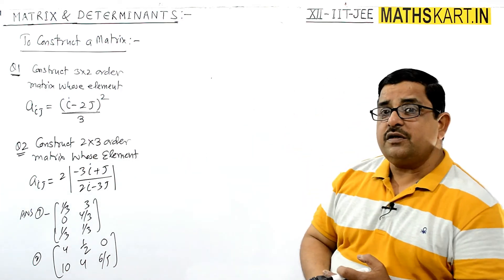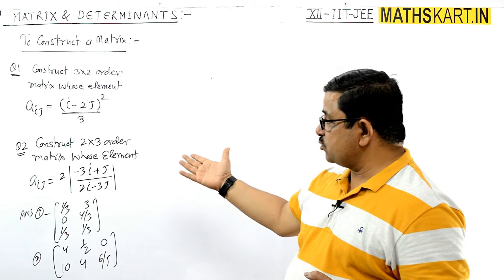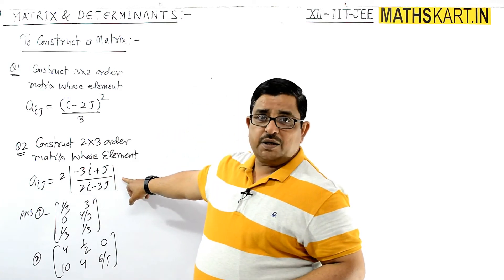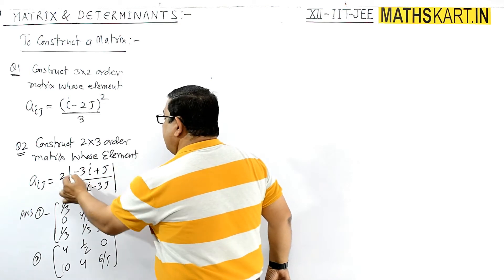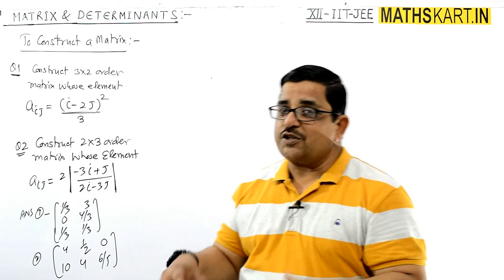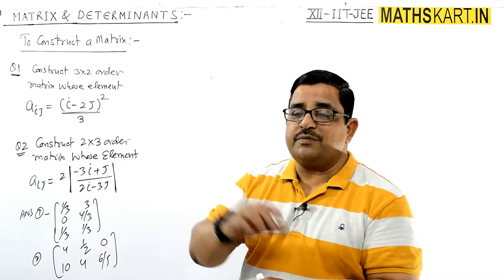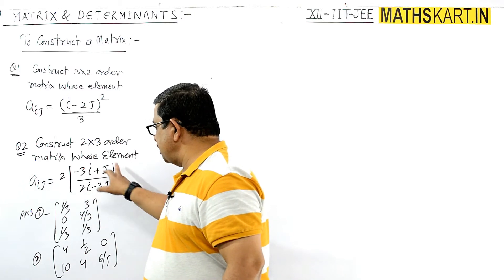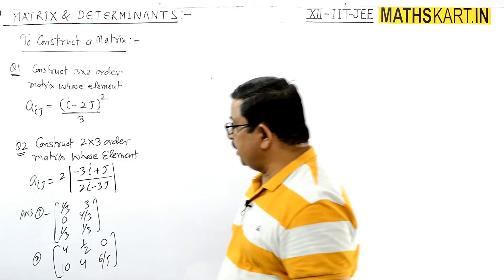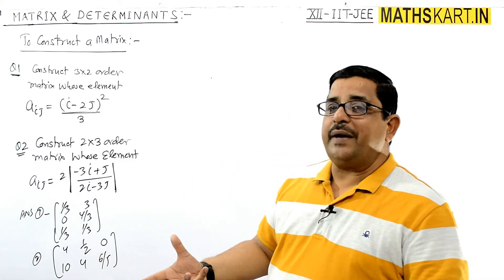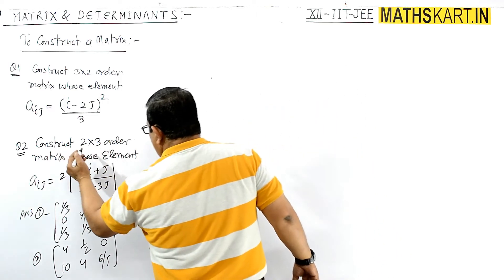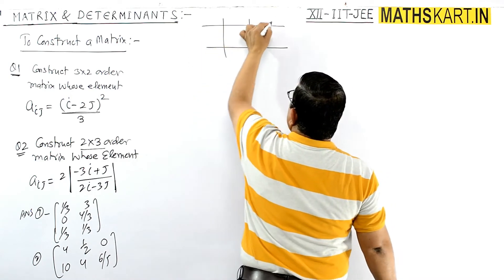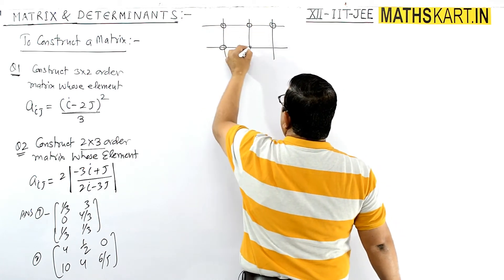Now suppose we have to construct the second question: construct the 2 by 3 order matrix whose element aij is given by 2 times the modulus of (minus 3i plus j) divided by (2i minus 3j). This is a modulus — you have to make the result positive. The matrix is 2 by 3 order: 2 rows and 3 columns, so 6 members.